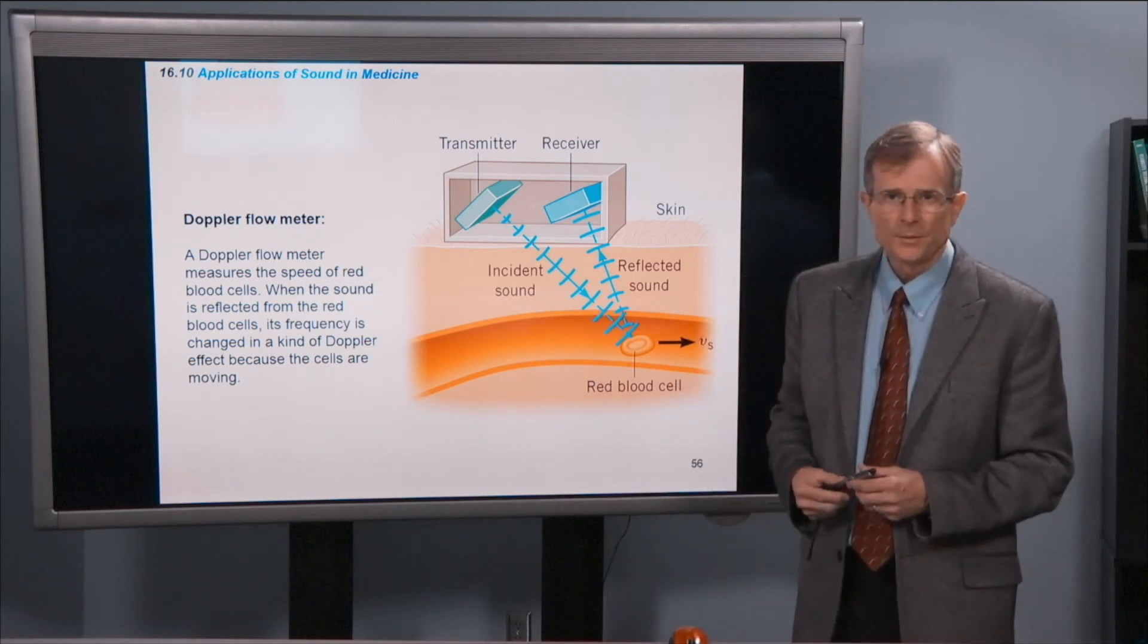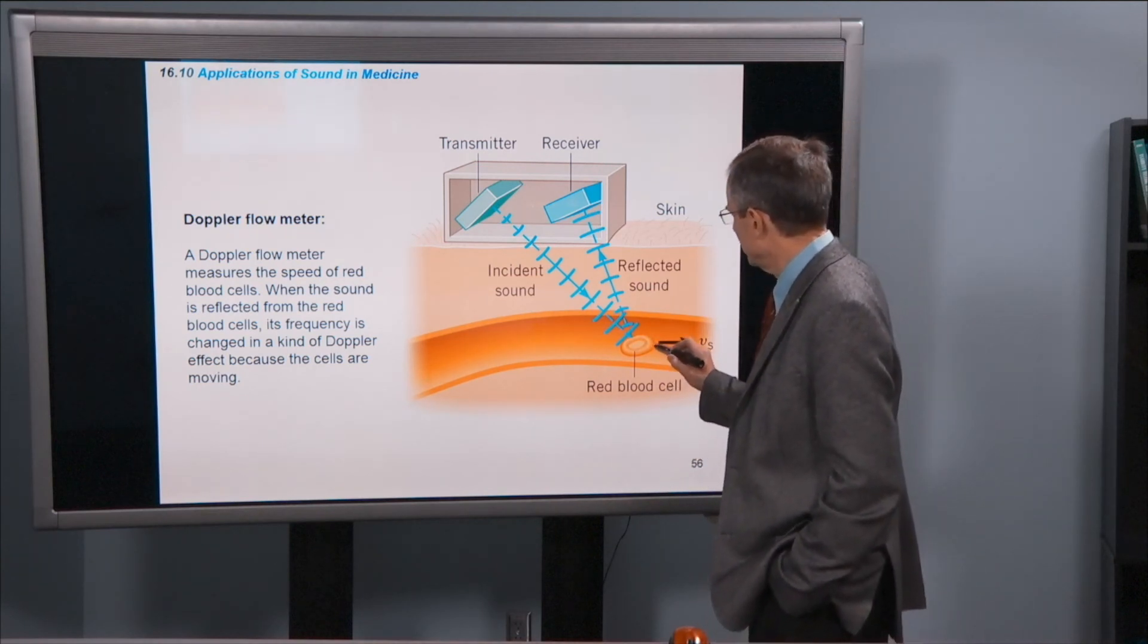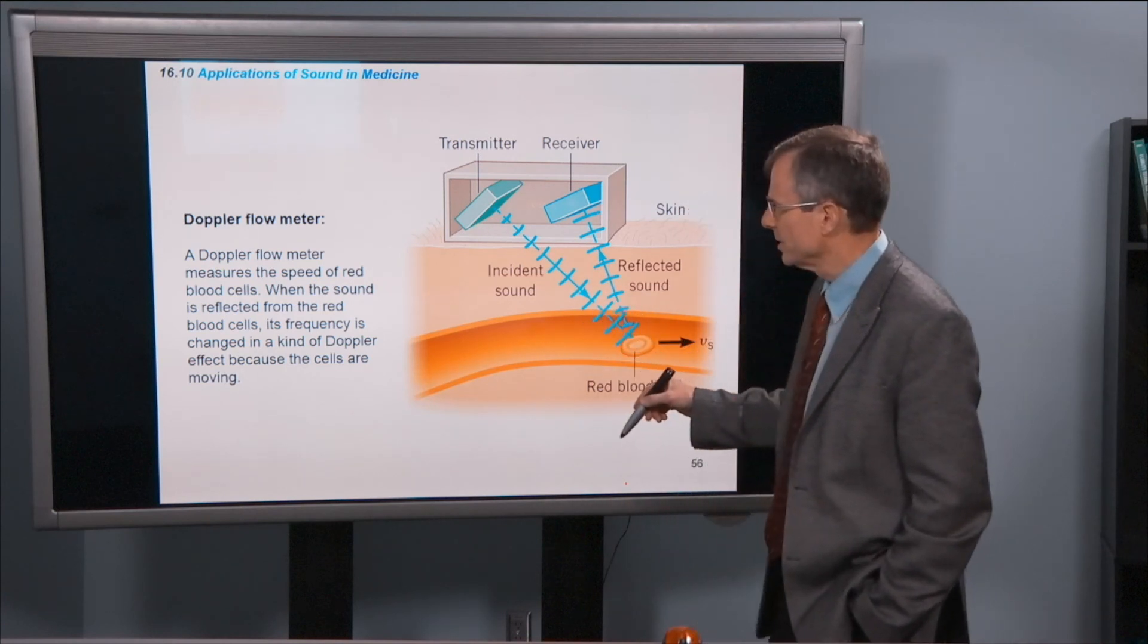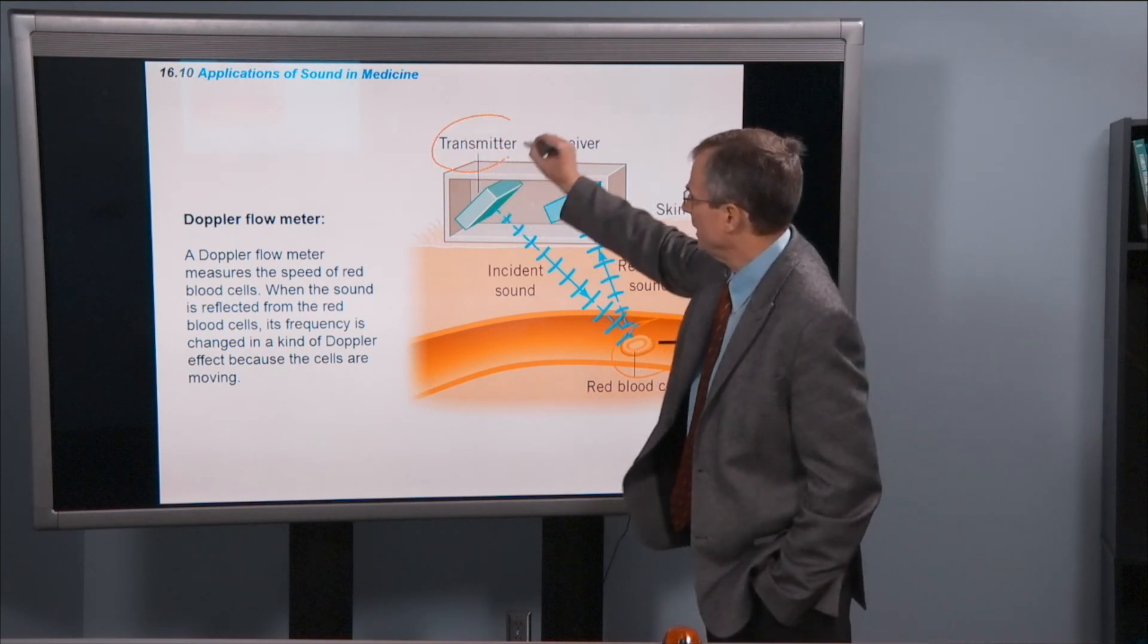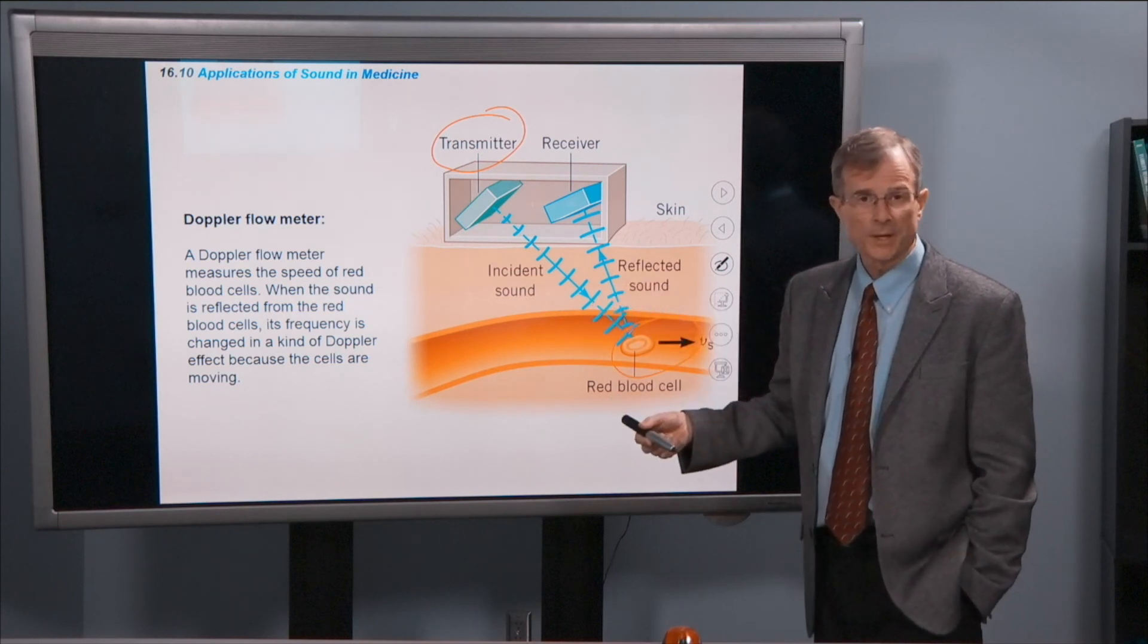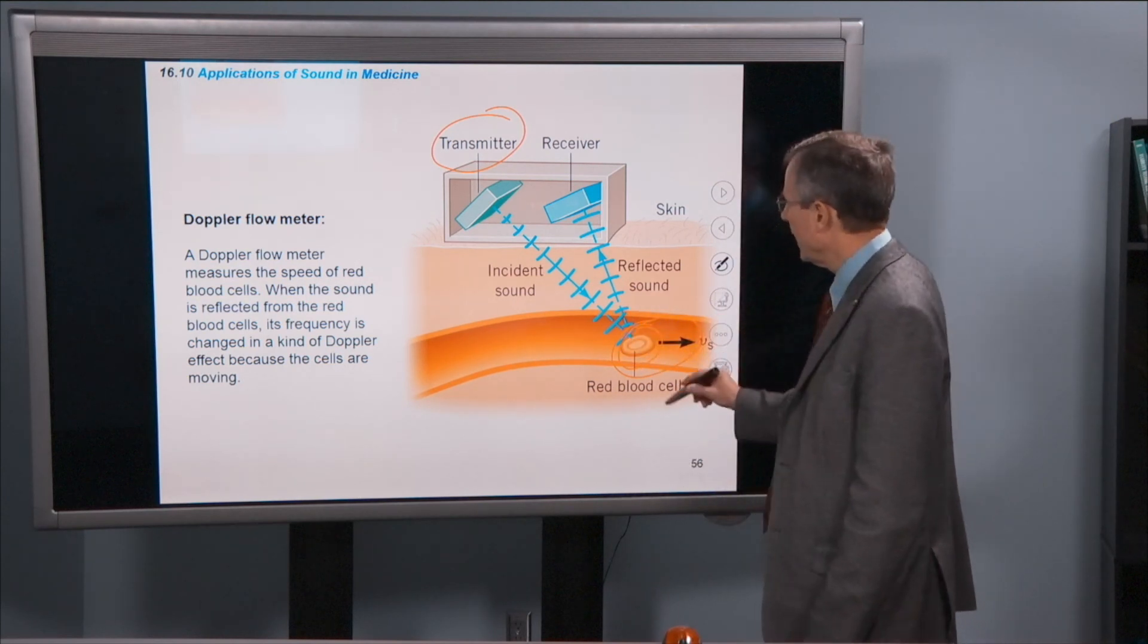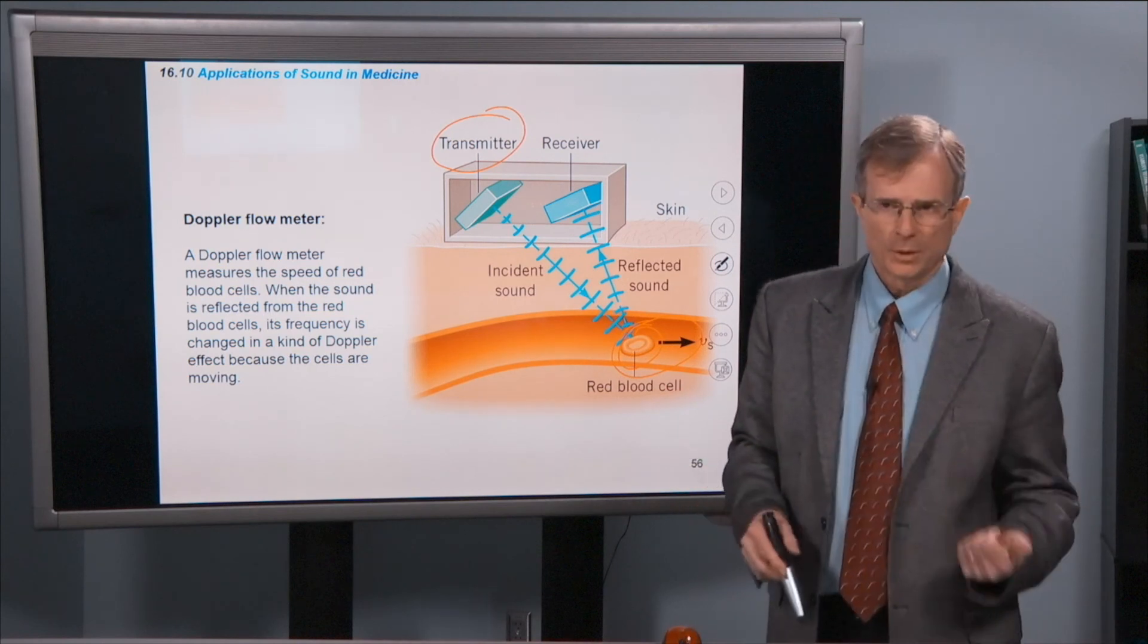Doppler effect is used in medicine to do what's known as a Doppler flow meter. It measures the speed of red blood cells. When the sound is reflected from the red blood cell, its frequency has changed in a kind of Doppler effect. The blood cell is moving and you're transmitting some sound hitting a moving target. This is like a police radar as well. It works on the same principle. So this red blood cell now becomes a source, moving away, and that reflected sound's frequency will change depending on whether the red blood cell is approaching or going away.